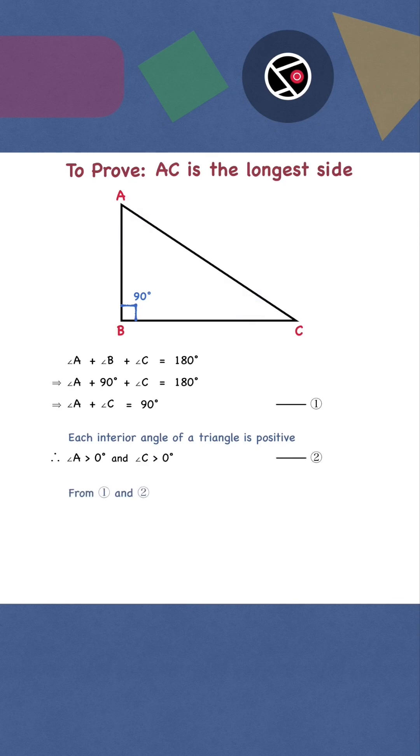From 1 and 2, angle A and angle C are acute angles, less than 90 degrees.